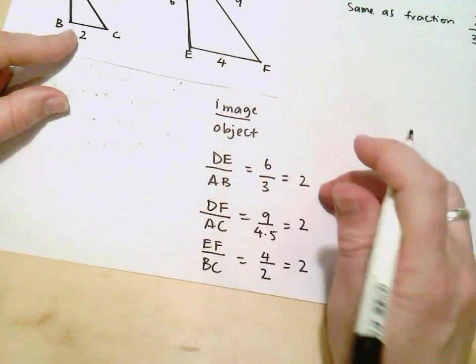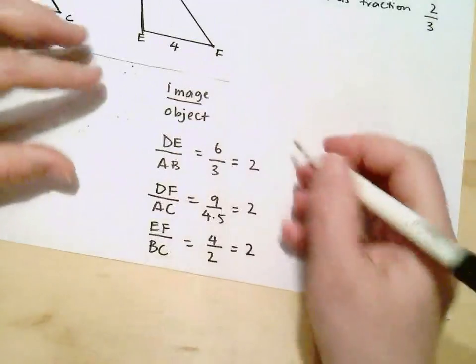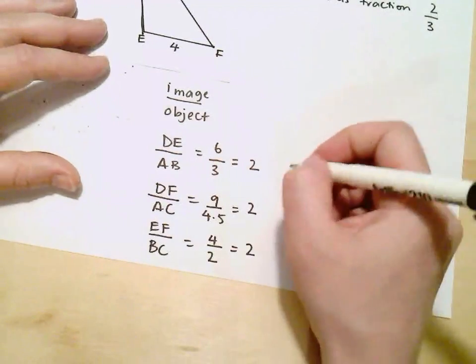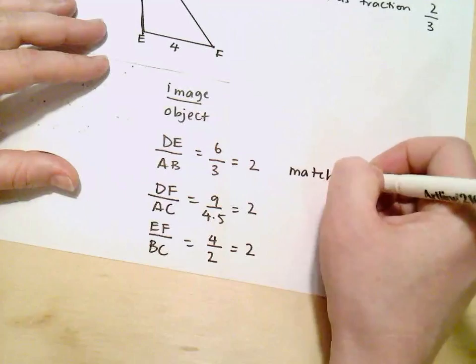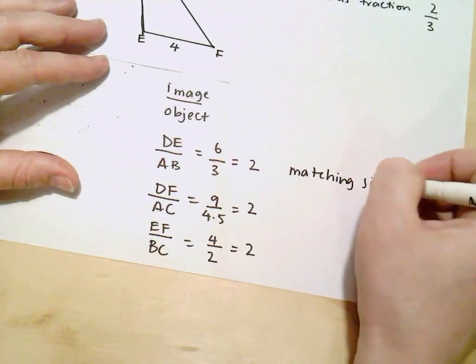So I can see that this, this and this, all of these ratios are the same. So I can say the matching sides are in ratio.